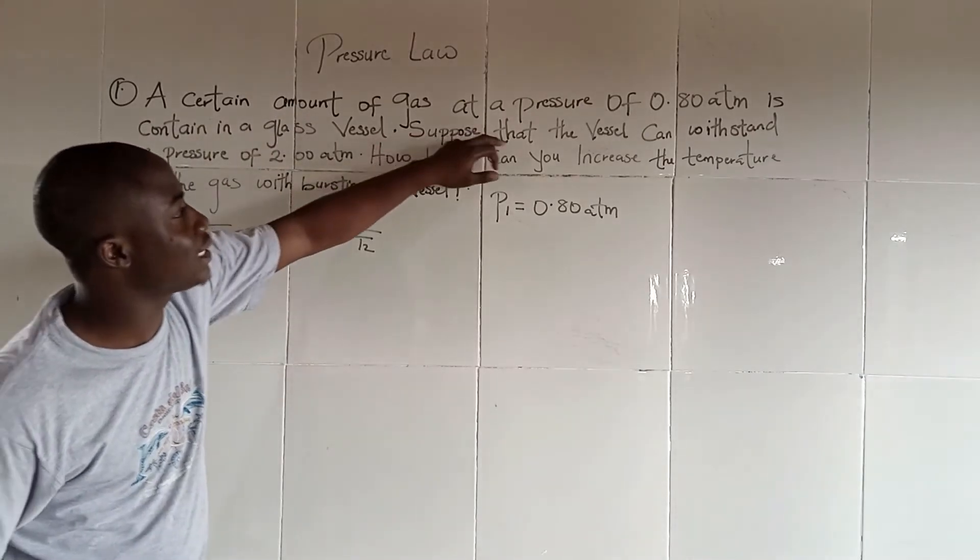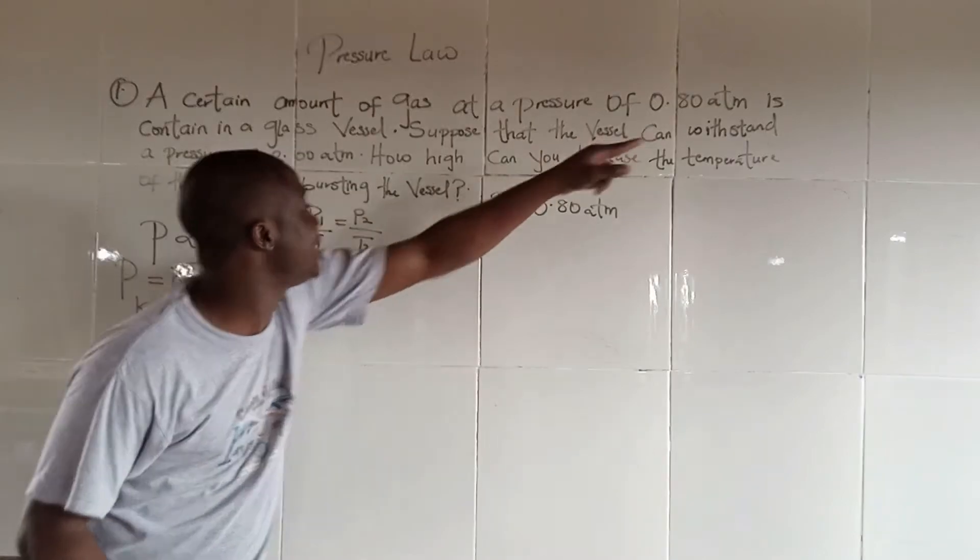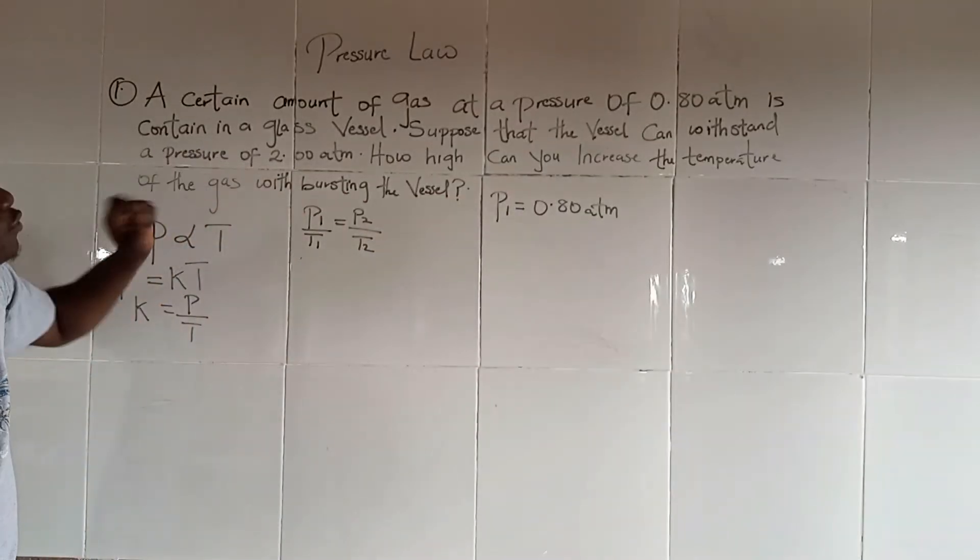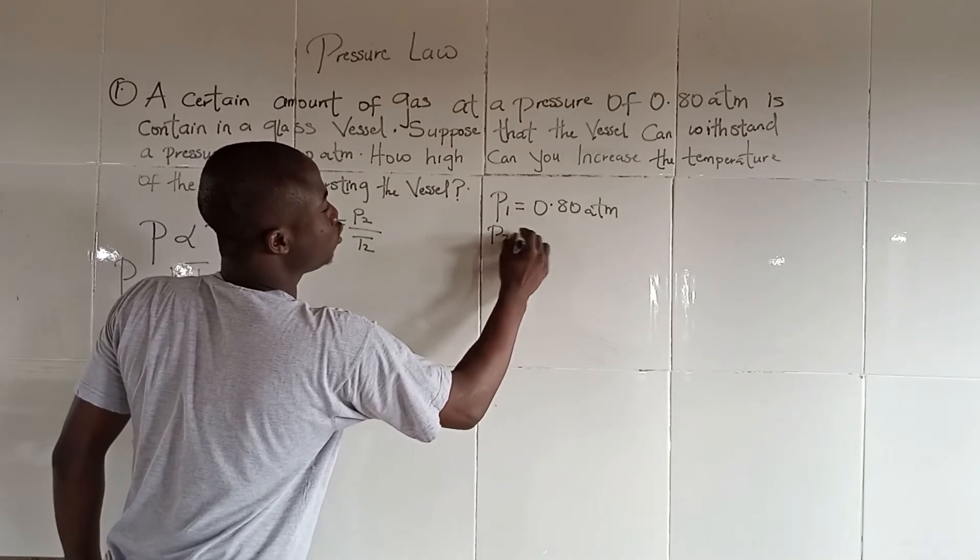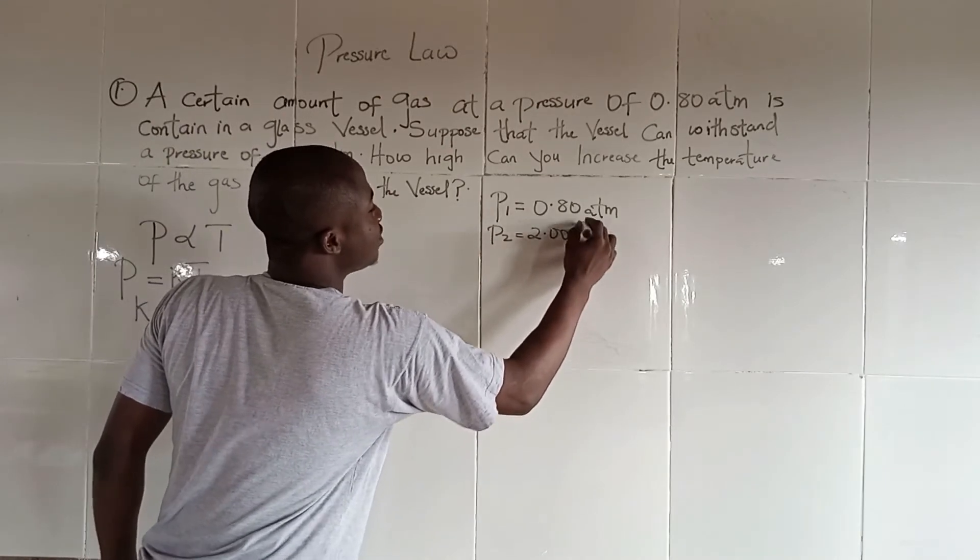Suppose that the vessel can withstand a pressure of 2 atm. So it means that pressure 2 is 2 atm.